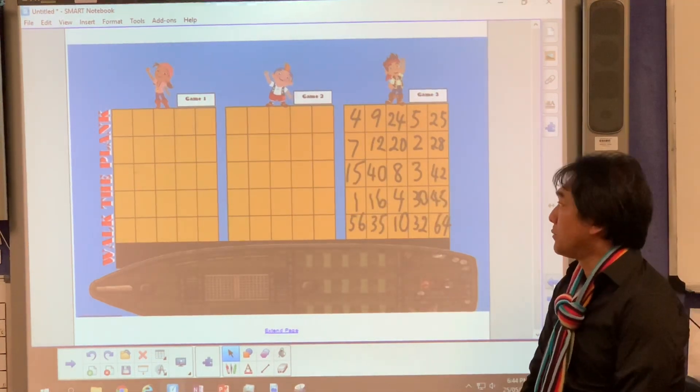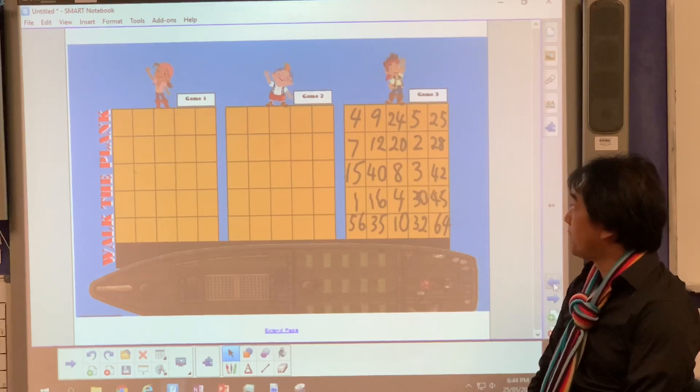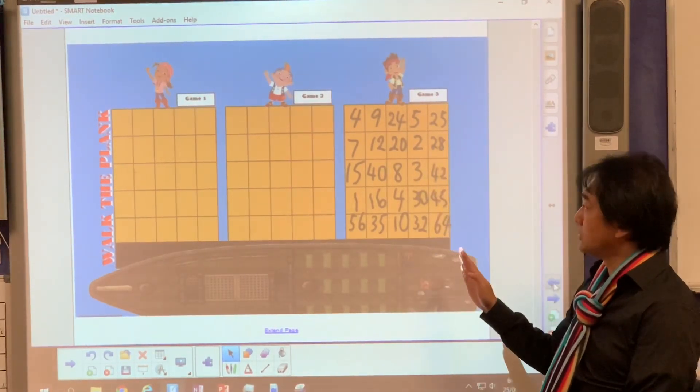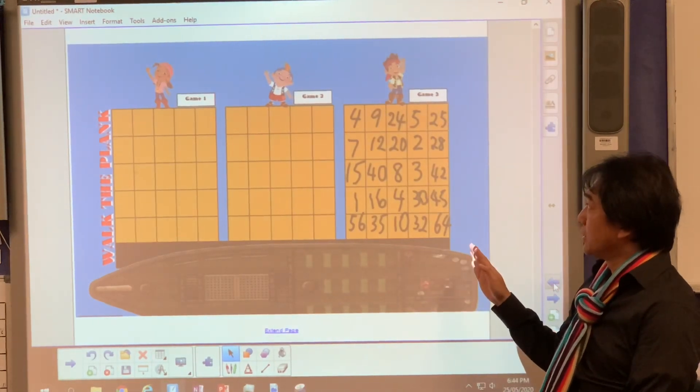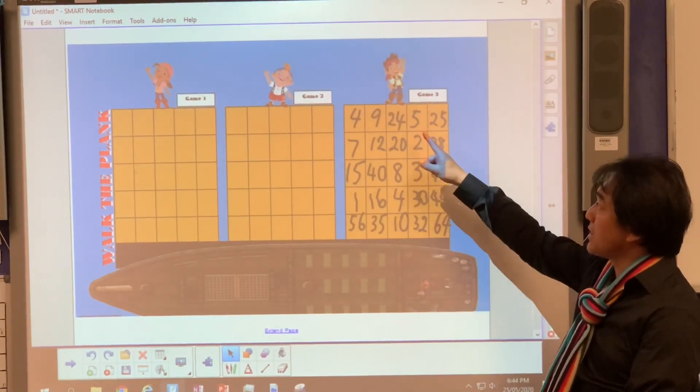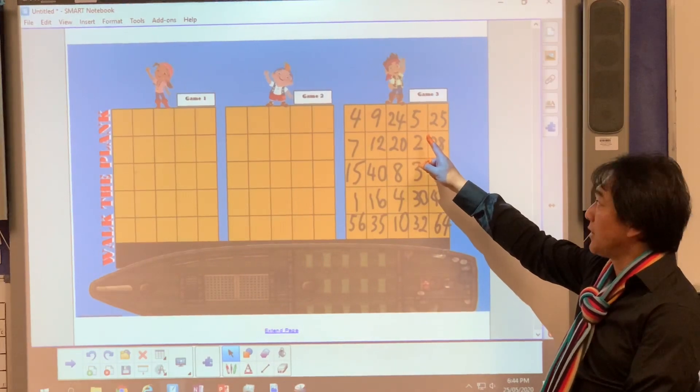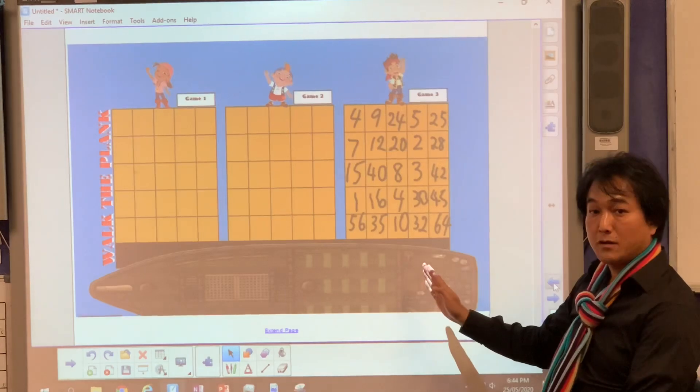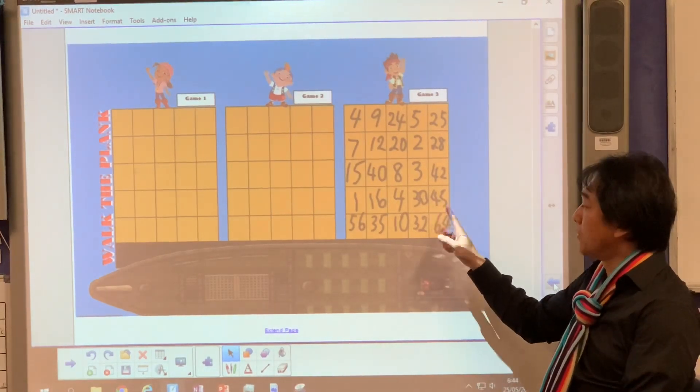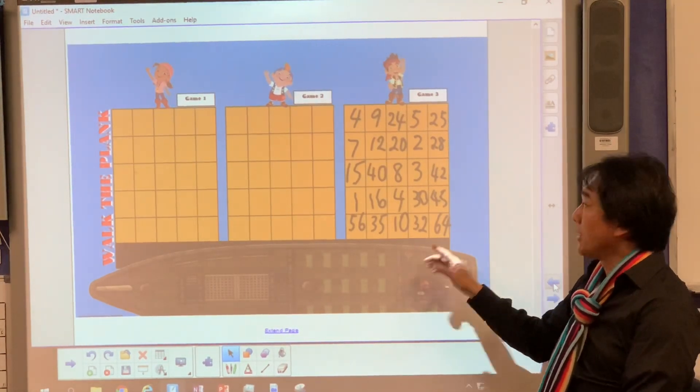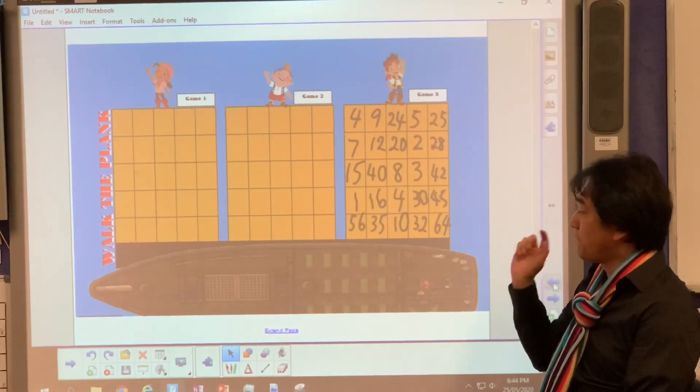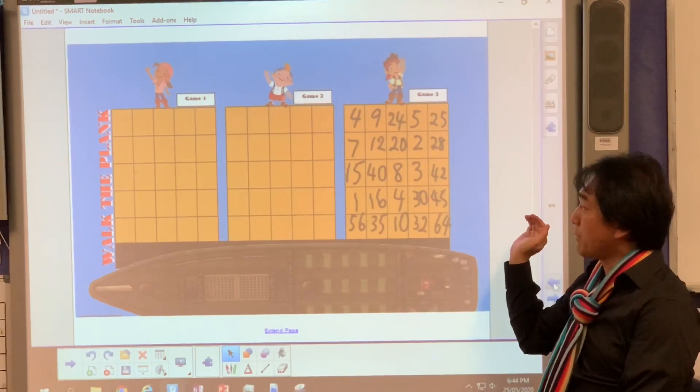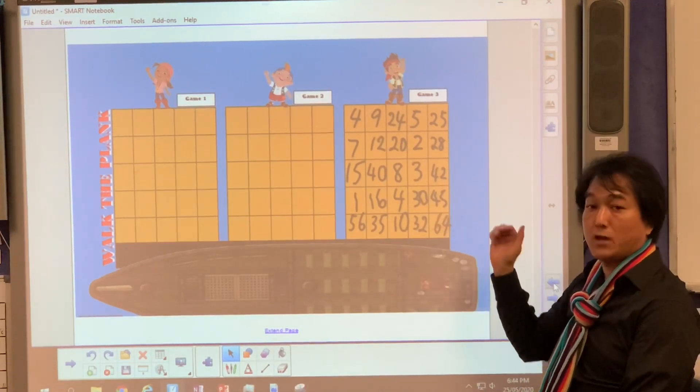So the objective of the game is to have five numbers in a row going downwards or vertically. Because you're standing on the edge of the plank and if you get five numbers in a row vertically, you are allowed to come back or get back onto the ship. If you have five numbers in a row across or horizontally, your plank will be chopped and you'll be in water.